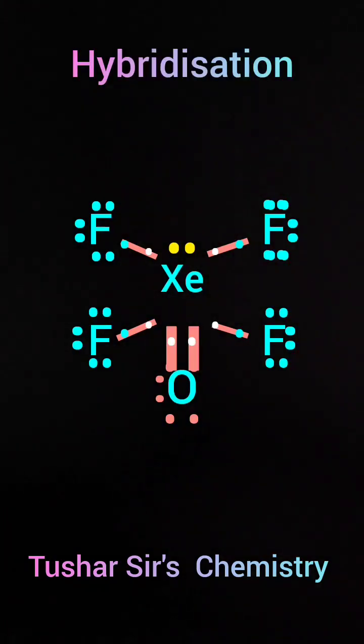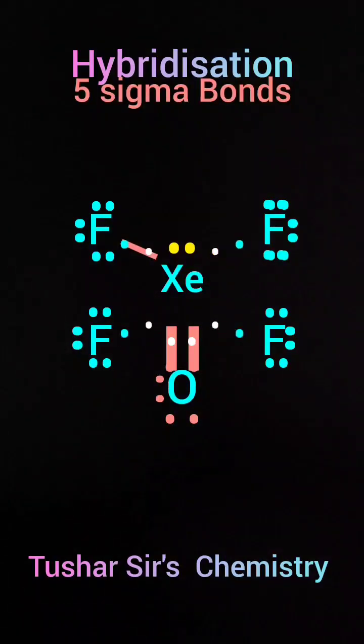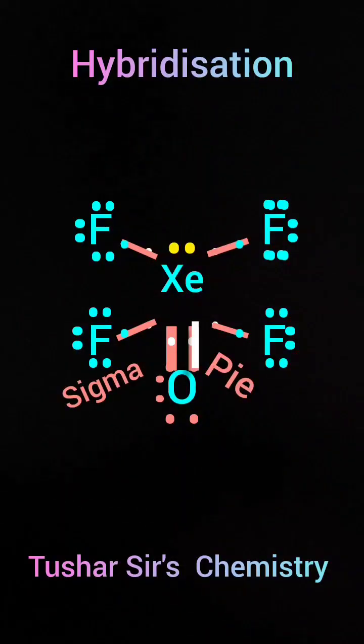Now we will find the type of hybridization of xenon by using a trick. Number of sigma bonds formed by xenon is equal to five. How? With four fluorine, four sigma bonds. With one oxygen, there are two bonds, but one of them is sigma. The other one is a pi bond.